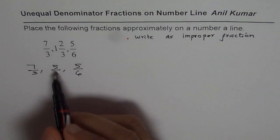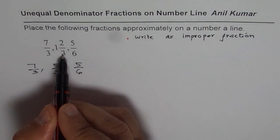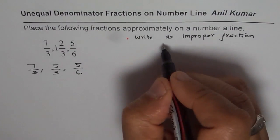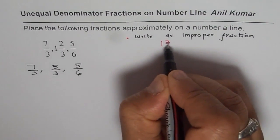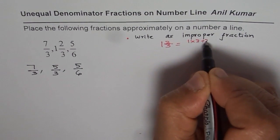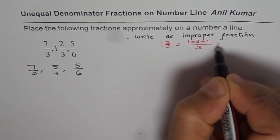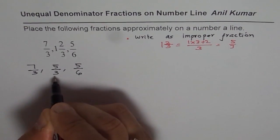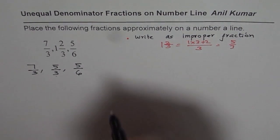1 and 2 over 3: multiply 1 by 3, add 2. So 1 times 3 is 3, 3 plus 2 is 5. So we get 5 over 3. And the last one is 5 over 6. So now we can write these as improper fractions.